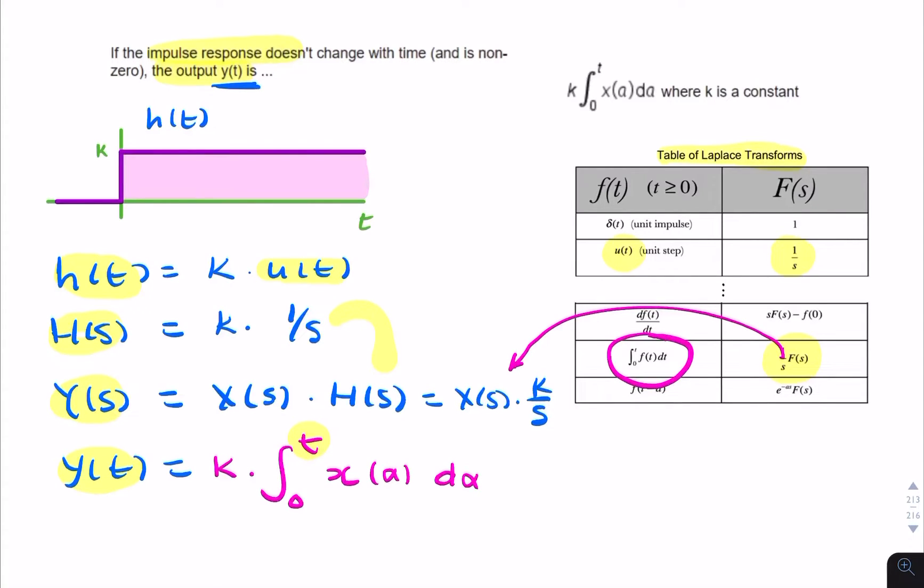So that's where this came from in the question. So that is our final answer, that we can find the output by starting from the impulse response, finding the transfer function, from the transfer function finding the output in the S domain, and then finding the inverse Laplace transform of that to find the time domain output.